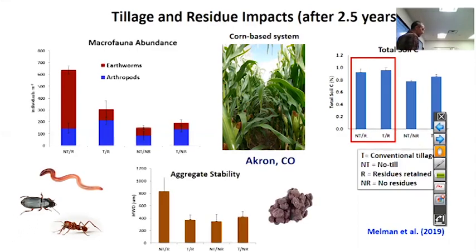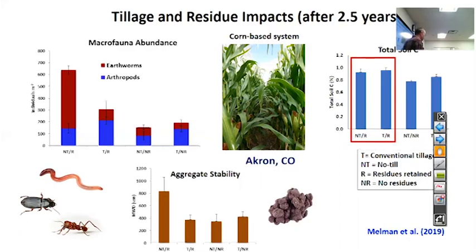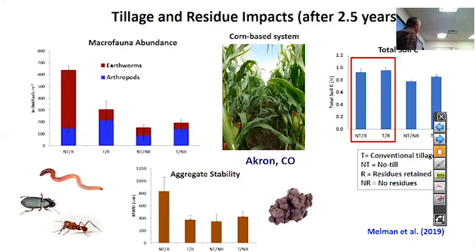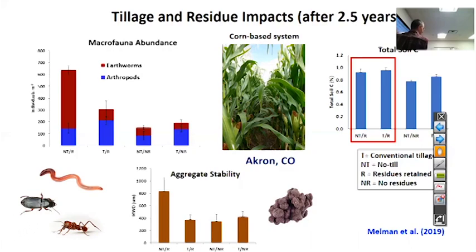We saw a very similar trend with aggregate stability. Aggregates are basically little particles of clay, sand, and organic matter bound together. They don't blow away, they're a site for things to grow, they're related to organic matter accumulation, they allow water to infiltrate, and there are many reasons we want better-aggregated soil. We're seeing a very similar trend to earthworms with aggregate stability, which suggests this could be caused by earthworms, or both are being affected by a similar factor. Just after two and a half years, we're starting to see these strong effects.